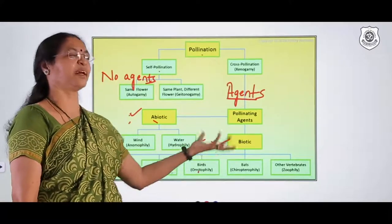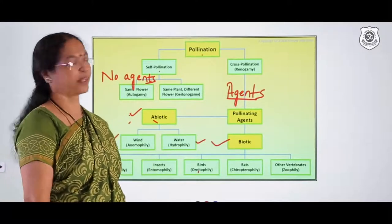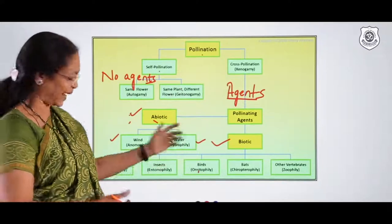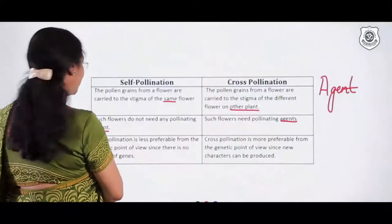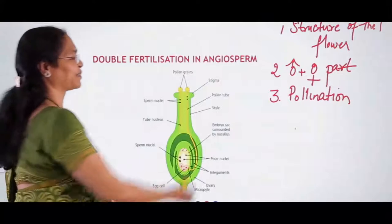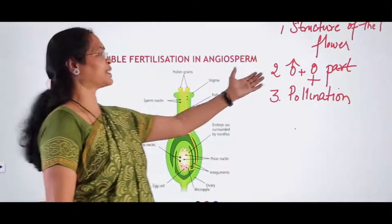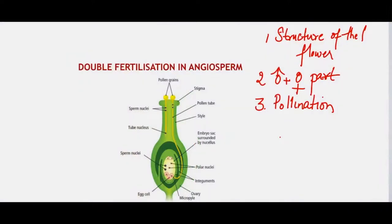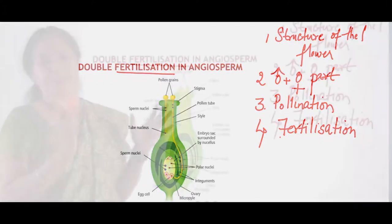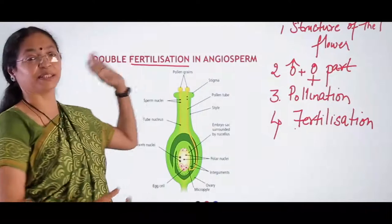Pollination is the important phenomenon that must occur before fertilization can take place. After learning the structure of the flower and the process of pollination, the most important step is fertilization. Fertilization is very important for the survival of any species and the existence of any organism. Sexual reproduction brings about variation, enabling evolution — and it is found in almost all higher organisms.